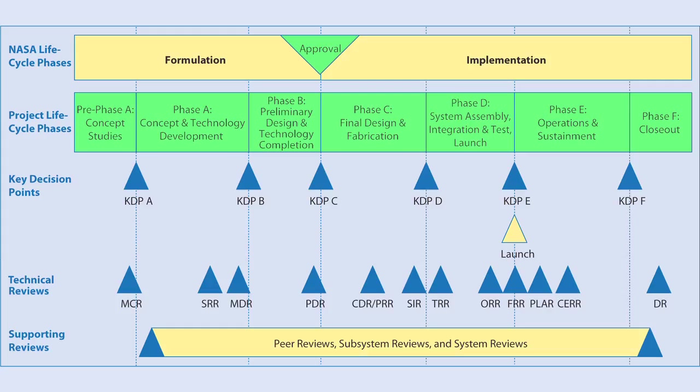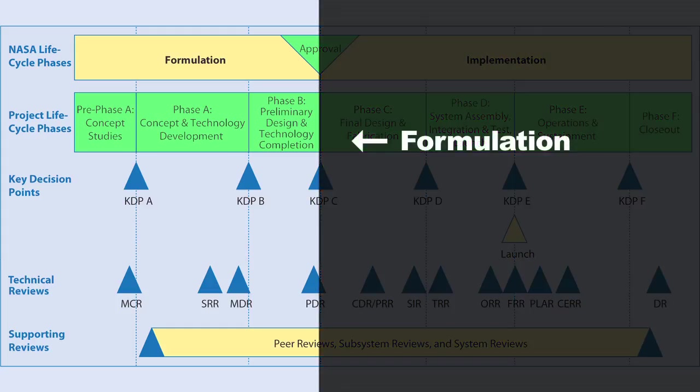The beginning part of this chart is called the formulation part. During formulation, you're really thinking through ideas, developing concepts of operations, and developing general architectures. You're doing a lot of analysis of different options. In many cases it's a scientist requirement — a scientist has an idea, or in some cases a president has an idea. Going back to Apollo, President Kennedy said, 'I want to send humans to the moon and bring them back by the end of the decade.'